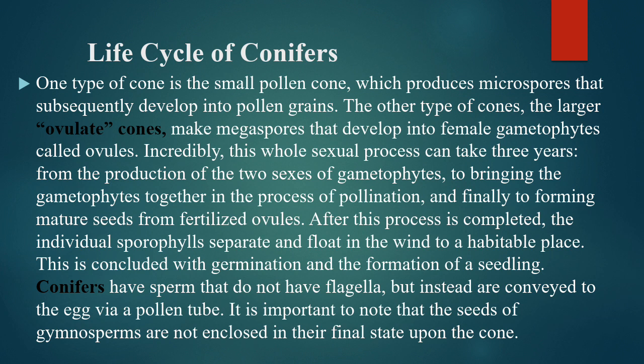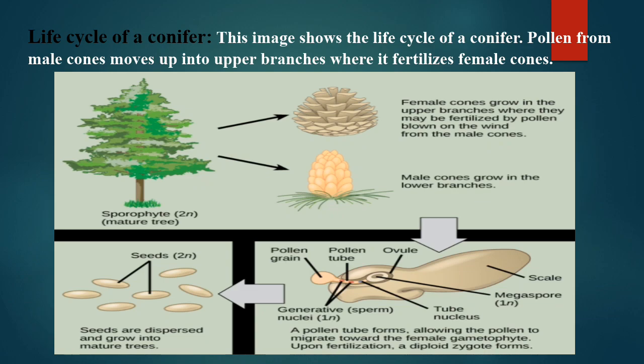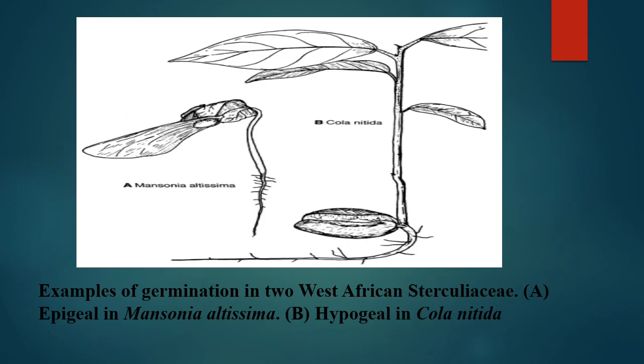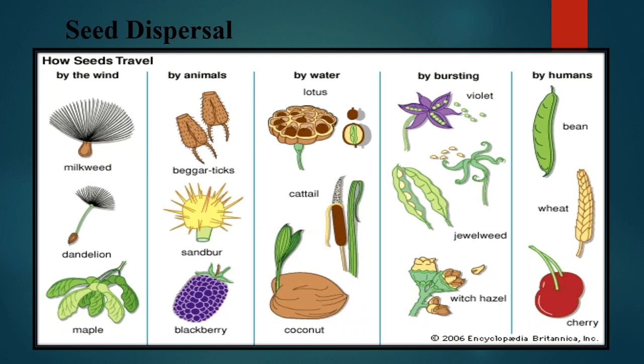Both gametes fuse with each other, fertilization occurs, and a new sporophytic body is produced. Life cycle of conifers: you can observe here in the diagram. Female cones grow in the upper branches where they may be fertilized by pollen blown on the wind from the male cones, while male cones grow in the lower branches.